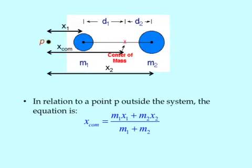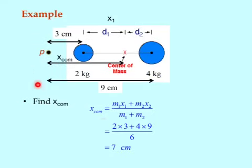Now in relation to a point P outside the system of two objects, the formula becomes like this. That distance x_com is from there to the center of mass. Here is the example worked out for you; you can work through it yourself.